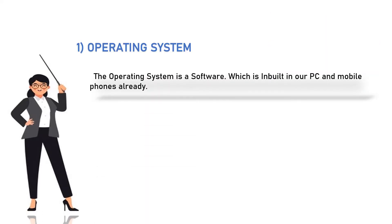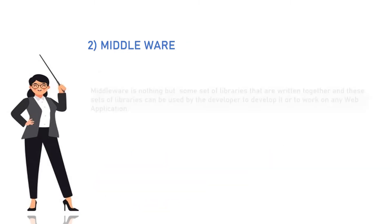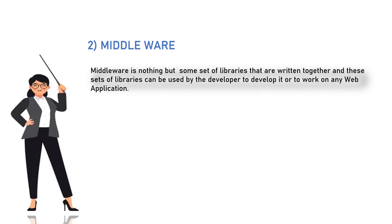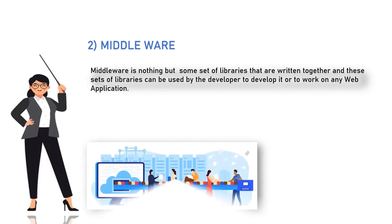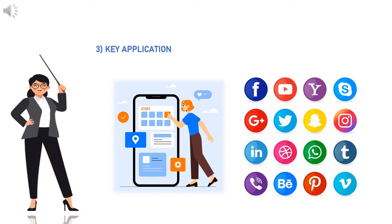1. What is an operating system? The operating system is a software which is inbuilt in our PC and mobile phones already. 2. Middleware — Middleware is nothing but some set of libraries that are written together, and these sets of libraries can be used by the developer to develop or work on any web application. 3. Key application — It is an application that is inbuilt in our system, like cameras, Gmail, SMS.